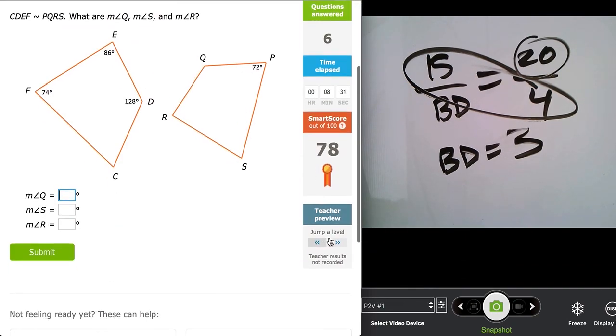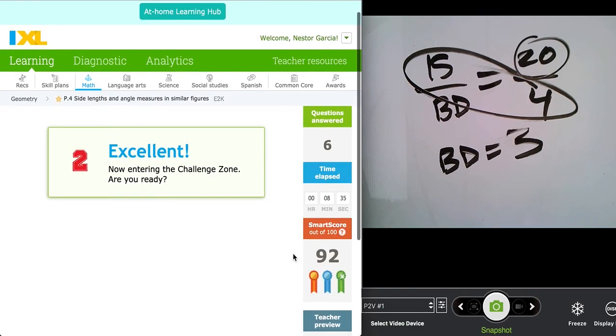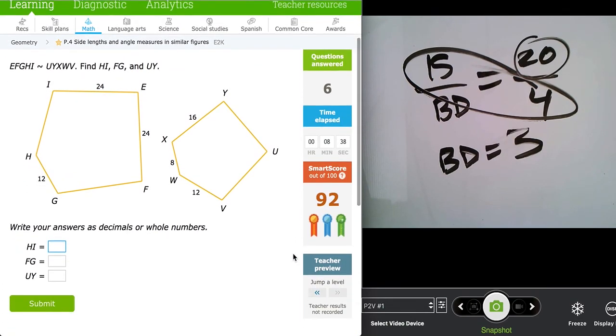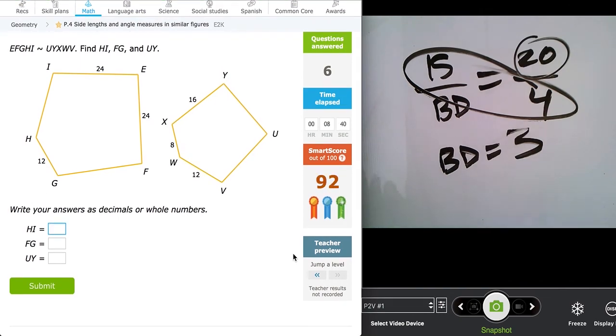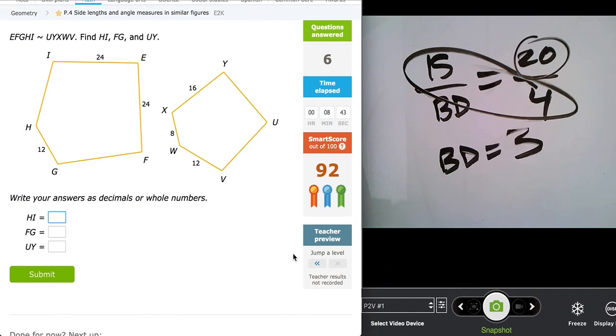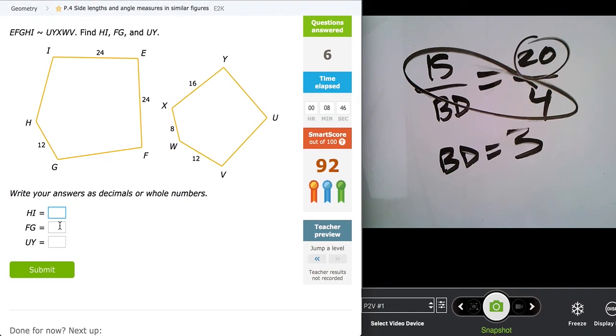Okay. So the only thing that gets tricky as you keep moving through these problems, you'll notice is that you're asked for more measurements. So just make sure you are extra careful in your calculations so that you get all your measurements correct and you don't end up having to redo extra problems because one measurement is off. All right. Be sure to email me if you have any questions.